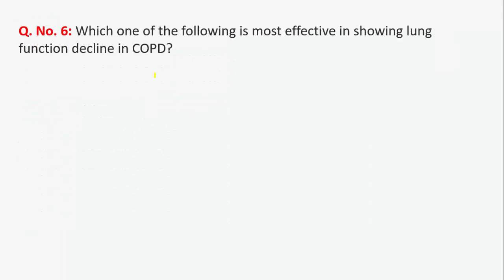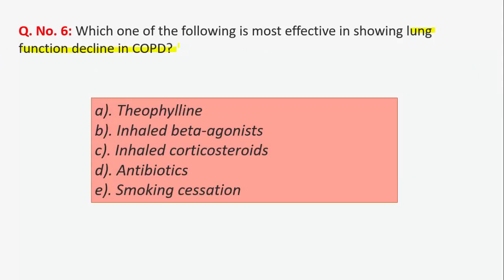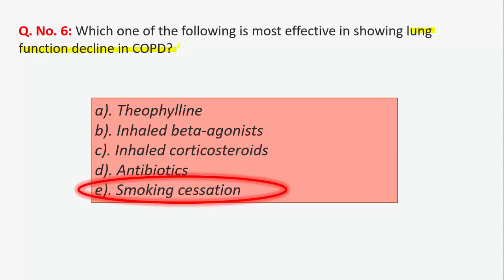Question 6: which one of the following is most effective in slowing lung function decline in COPD? It is smoking cessation, because it is the most important risk factor in the development of COPD. In patients with COPD, smoking cessation has been shown to slow the decline of lung function and even improve lung function. It is the first-line treatment and the first thing beneficial in cases of COPD.